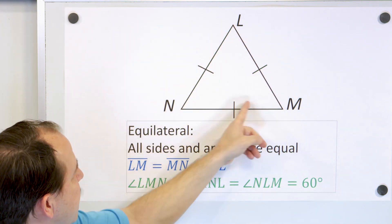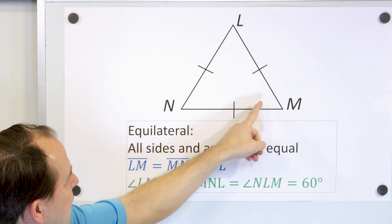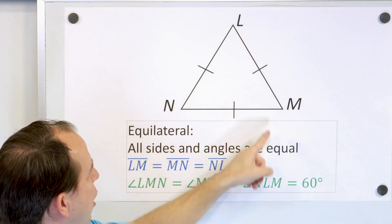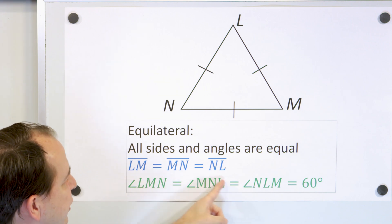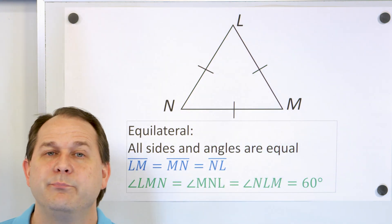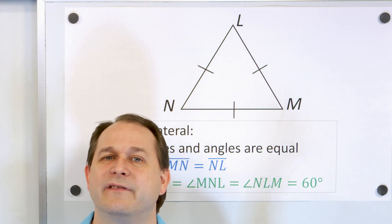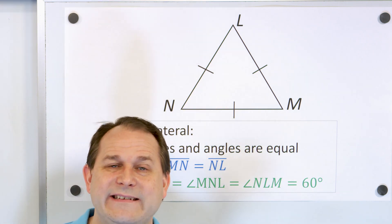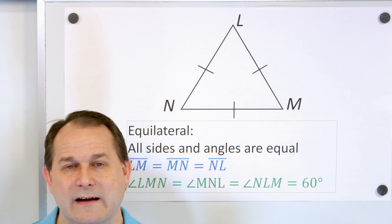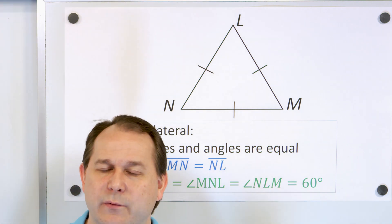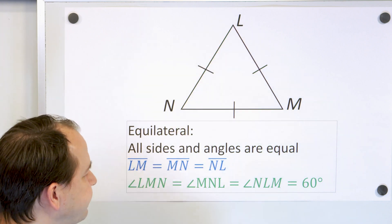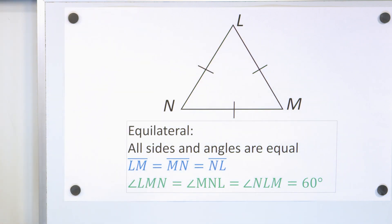Angle LMN, angle MNL, and this one here — all of these angles are equal to 60 degrees. Because 60 times 3 is 180, so if you take 180 and divide it by 3, you get an angle of 60 degrees. Equilateral triangle — very important.